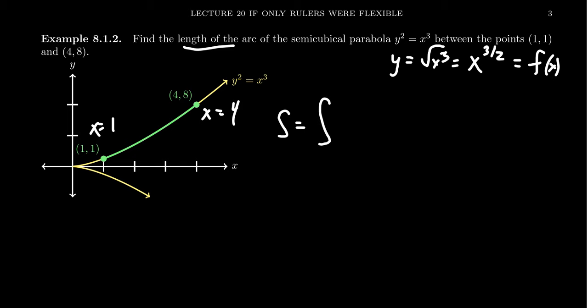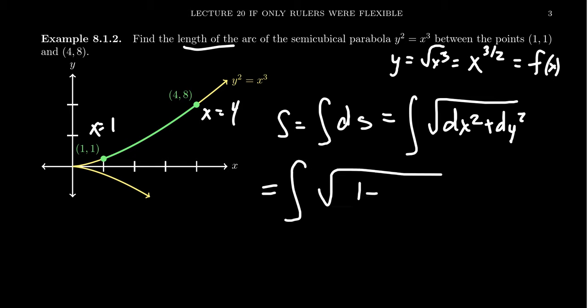So, for example, s equals the integral of ds, for which case we've seen previously that this is equal to the integral of the square root of dx squared plus dy squared. Now, factoring out the dx squared, we can put this in a form that's going to be more useful for us.